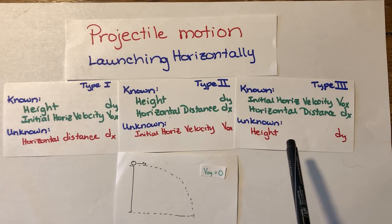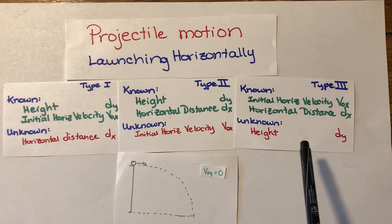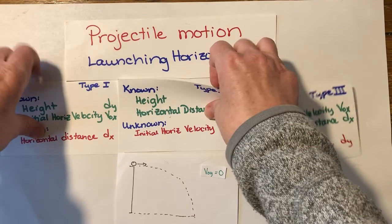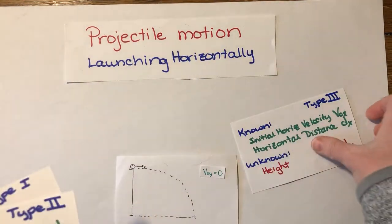This video is about type 3, which is where we know the initial horizontal velocity and the horizontal distance that the ball travels, but we do not know the height that it was launched from. This one, some will find, actually a little bit simpler than the other two. So let's get to our question.